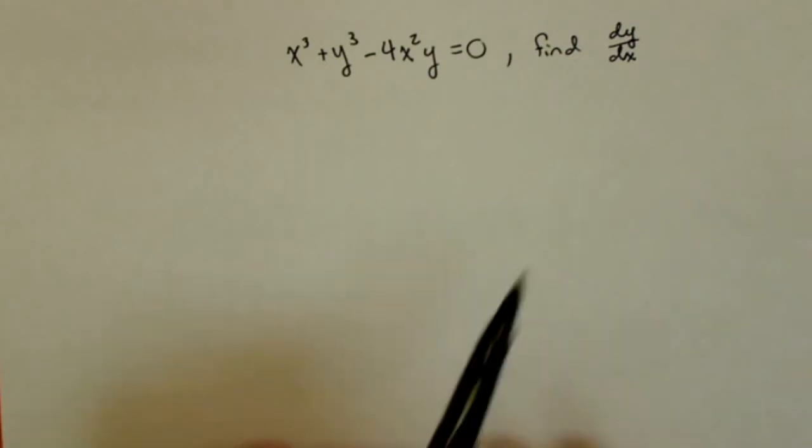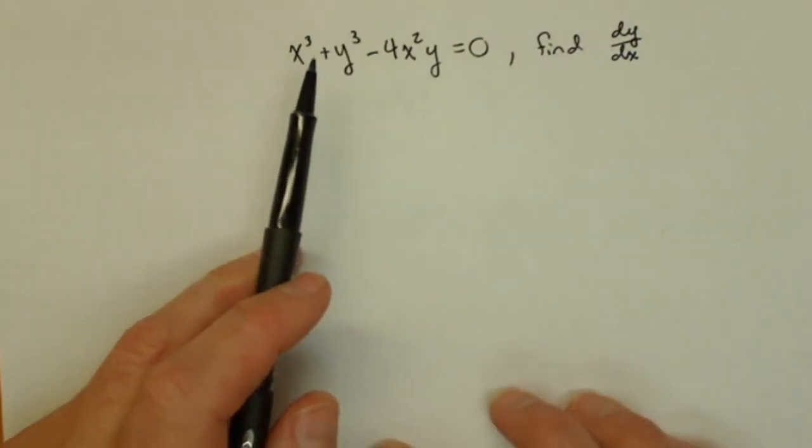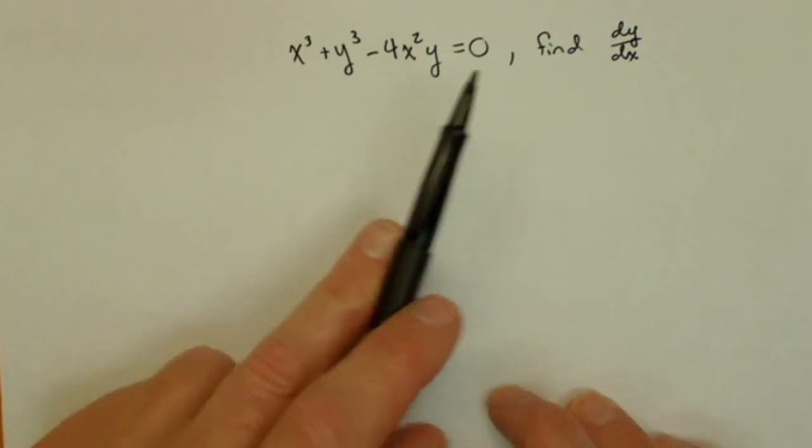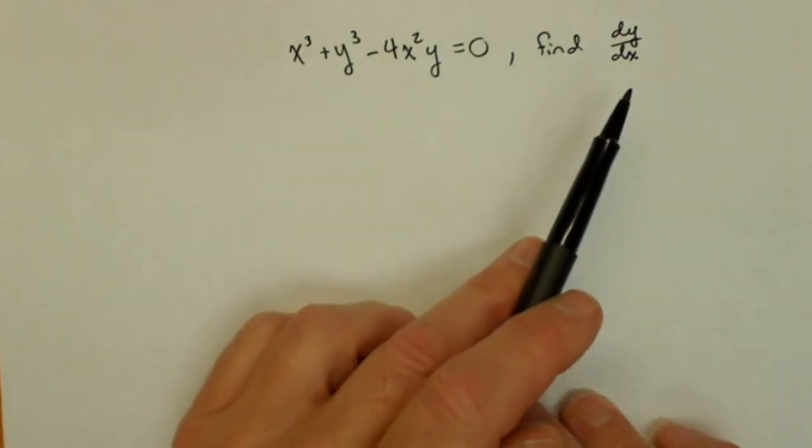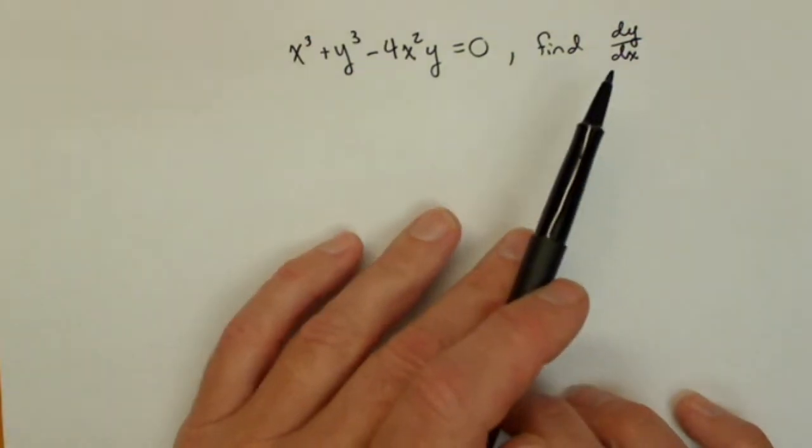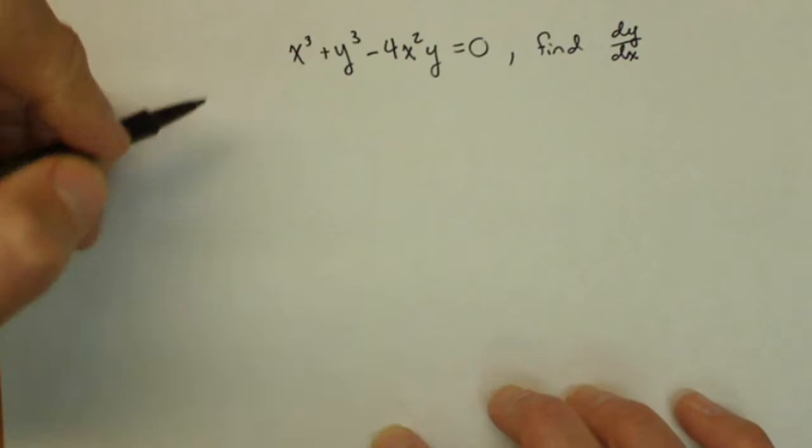In this video, we're going to find dy/dx for the implicitly defined function x³ + y³ - 4x²y = 0. I'm going to use the dy/dx notation in this. Sometimes in my videos I use y prime instead, but because it says dy/dx, let's go ahead and do this one in terms of dy/dx.